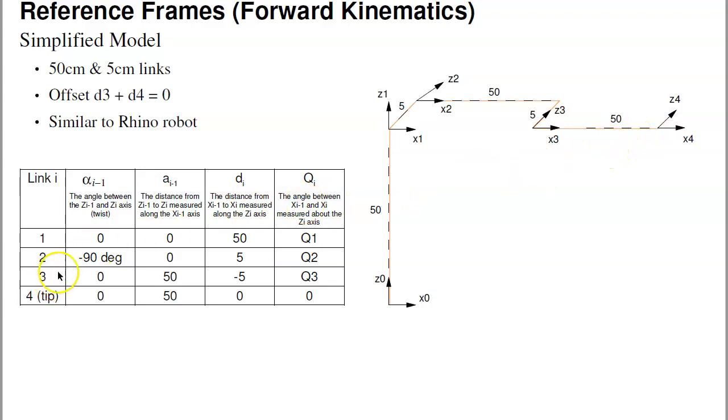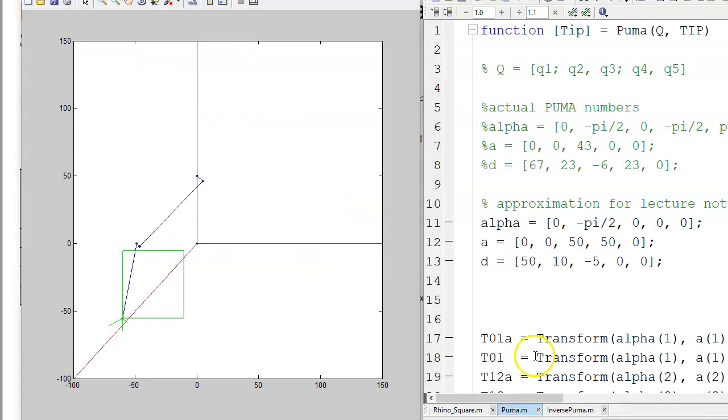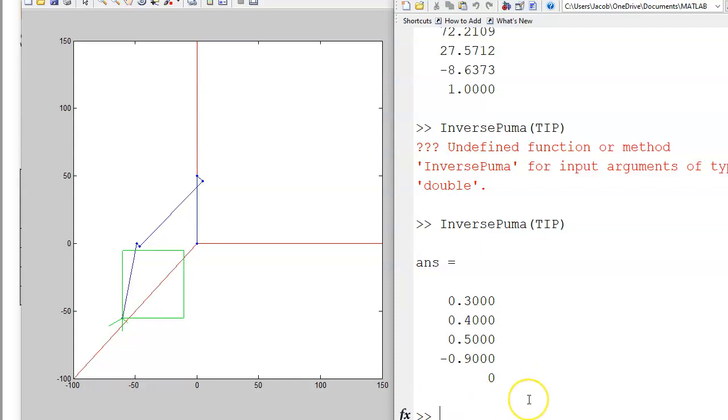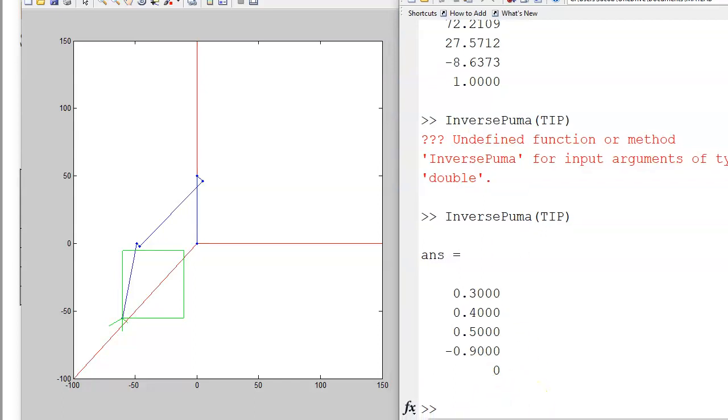The parameters for the robot then would be a twist going from Z1 to Z2, a displacement in the X direction going from 2 to 3 and 3 to 4, a displacement in the Z direction going 0 to 1, 1 to 2, and 2 to 3. Once you specify that, you can specify the robot simply by specifying q, alpha, a, and d. Note, just to be consistent with the Rhino Robot and to keep numbers a little bit simpler, I'm making the numbers 50 and 5 and minus 5. The actual Puma numbers are here. Same idea though.